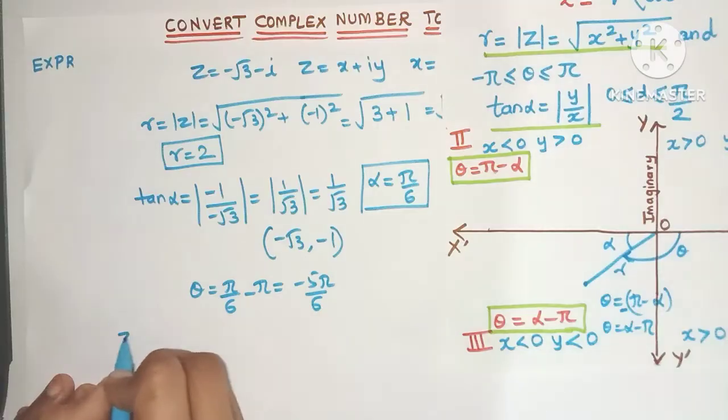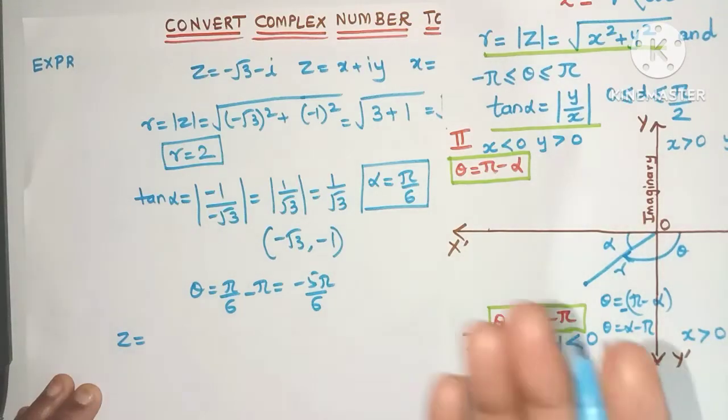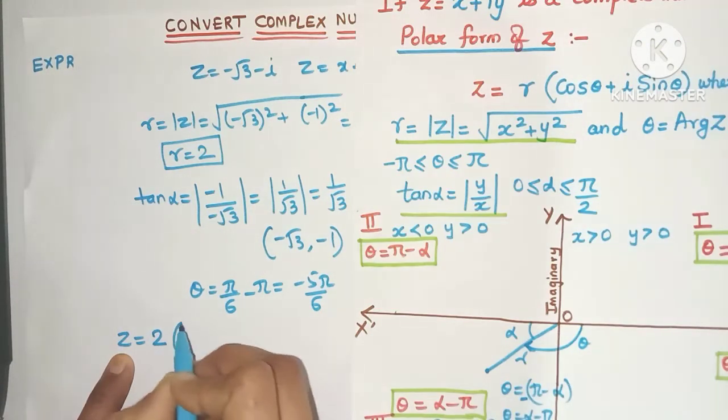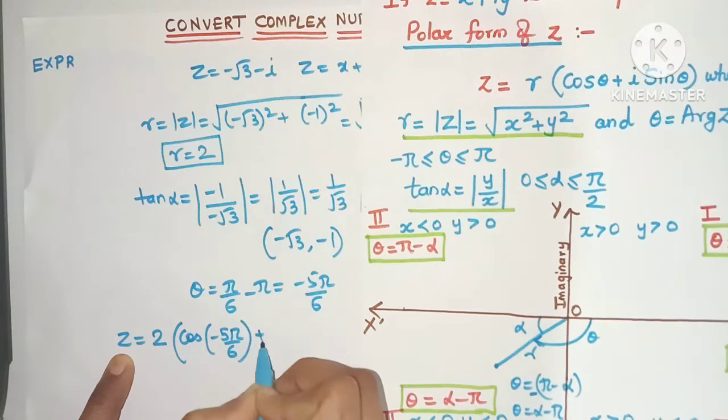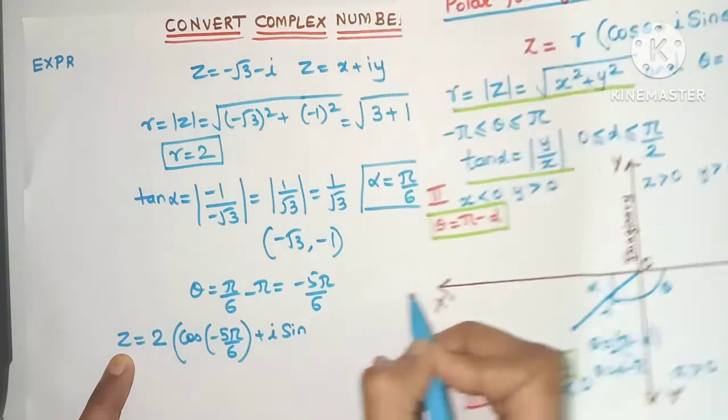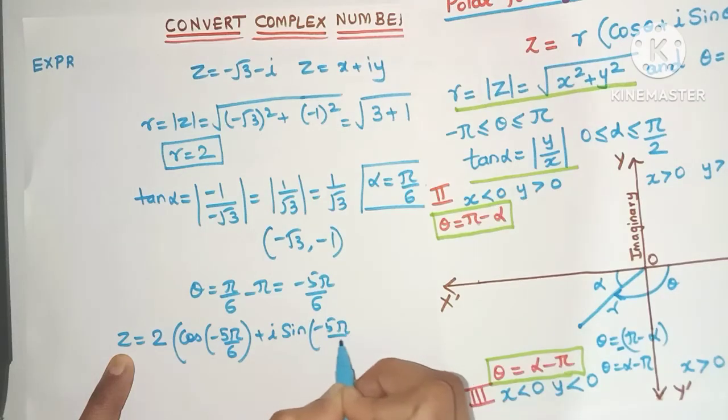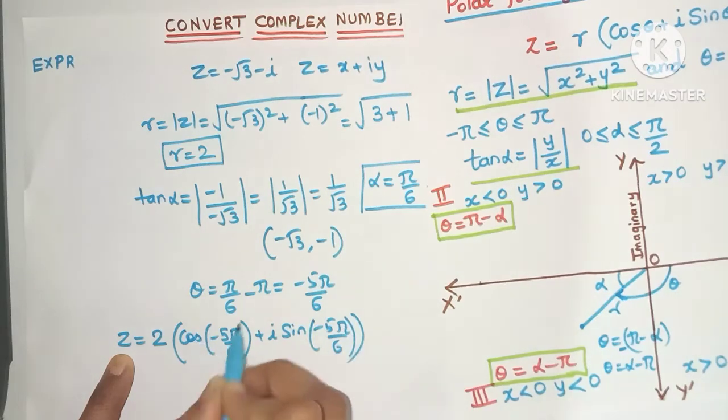Okay so now let's write the complex number in the polar form. So z = 2(cos(-5π/6) + i sin(-5π/6)). Remember to put the bracket sine because of the minus sign.